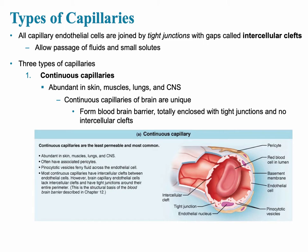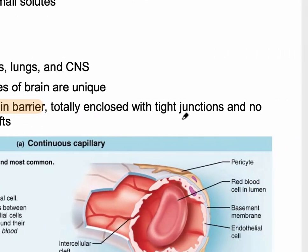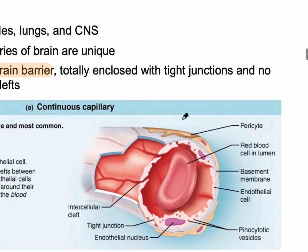They're very unique, and what they do is they form what's called the blood-brain barrier. The blood-brain barrier is very, very important to prevent the brain from being exposed to toxins. It's enclosed with these tight junctions, and you'll see the tight junctions in this diagram here.